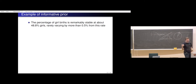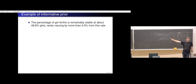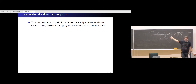An example of an informative prior: we talked about the percentage of girl births, which is so stable that it really varies by more than 0.5 percentage points from the base rate only in the most extreme cases. One of the most extreme cases observed is during extreme, long-duration hunger, such as that observed at concentration camps during the Second World War — and even then it's just around 0.5 percentage points difference.